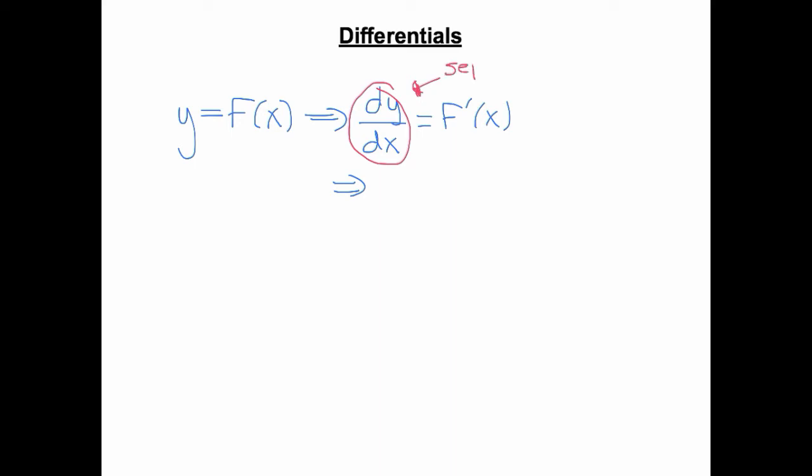What's done is separation of these terms here. Separate and treat as variables. So by doing that, you can isolate the dy by multiplying both sides by dx, and you can get that dy equals F prime of x times dx.